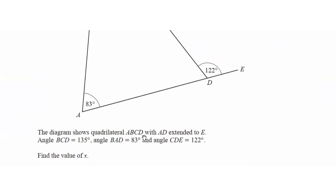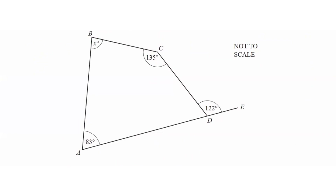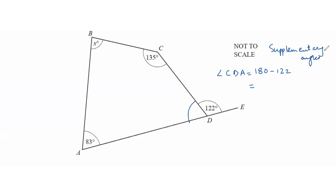Question 5: the diagram shows a quadrilateral ABCD with AD extended to E. Angle BCD is 135, angle BAD is 83, and angle CDE is 122. Find the value of x. First we find angle CDA: it's going to be 180 minus 122, because this is a supplementary angle and the sum of supplementary angles equals 180. So 180 minus 122 gives us 58.